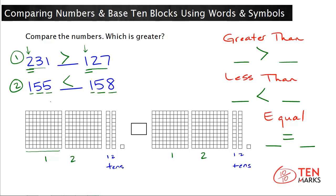The number on the left has one one, shown in red. And the number on the right also has one one. So this number has two hundreds, two tens, and one one. Because both of these numbers have the same amount of hundreds, tens, and ones, this means the numbers are equal.